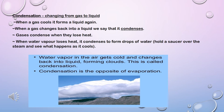Hold a saucer over the steam and see what happens as it cools. Remember the pot of boiling water? Place a lid over the pot and leave it there for a few minutes. Remove the lid and look at the side that was covering the pot. You will notice droplets of water. The droplets formed when the water vapor came into contact with the cool pot lid. Water vapor in the air gets cold and changes back into liquid forming clouds. This is also condensation. Condensation is the opposite of evaporation.